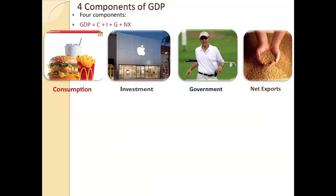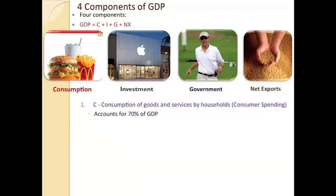Consumption spending is all the spending done by households or consumers. When we look at our economy here in the United States, 70% of our total income earned, or GDP — the total amount of things that are produced and then purchased — are based on us, consumers. That's a massive part of the economy. Sometimes people say, as the consumer goes, so does the economy.